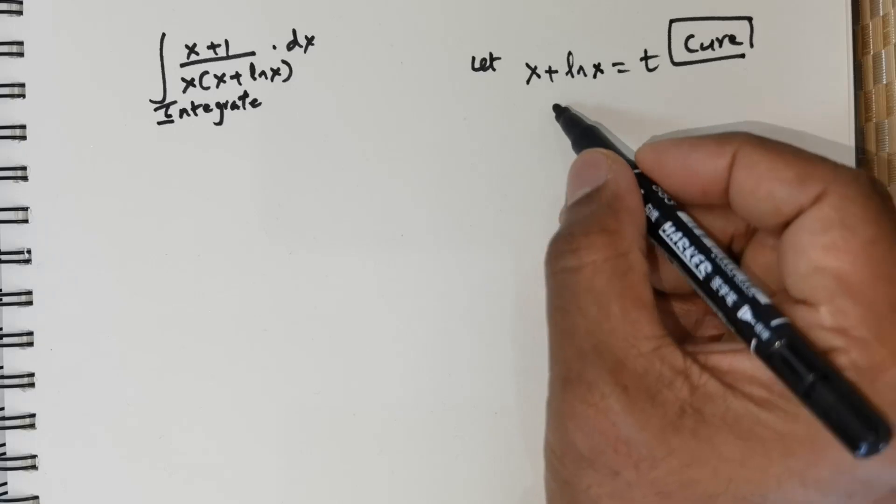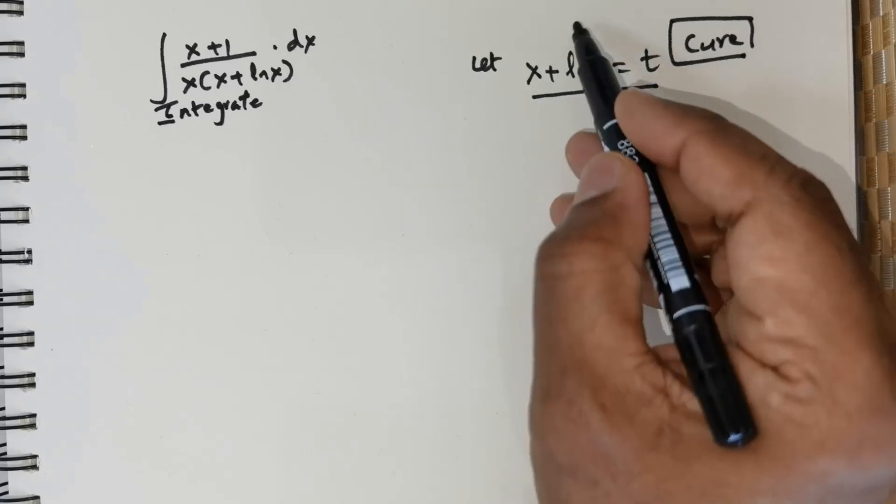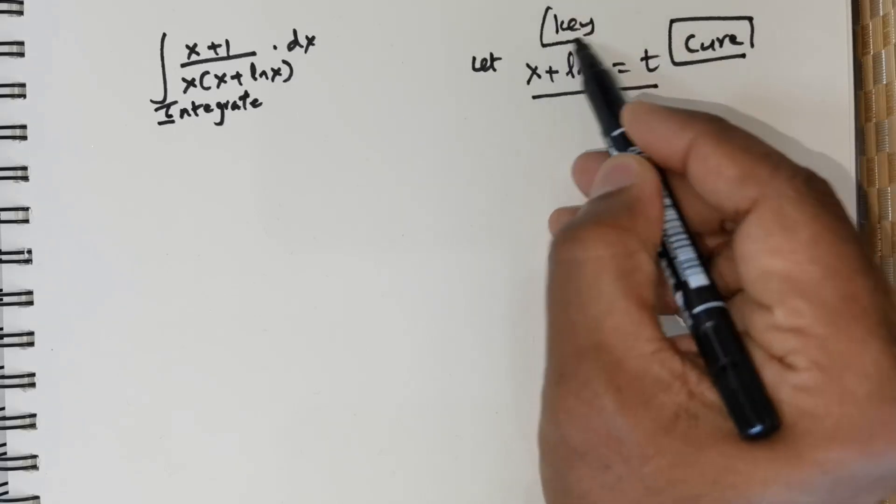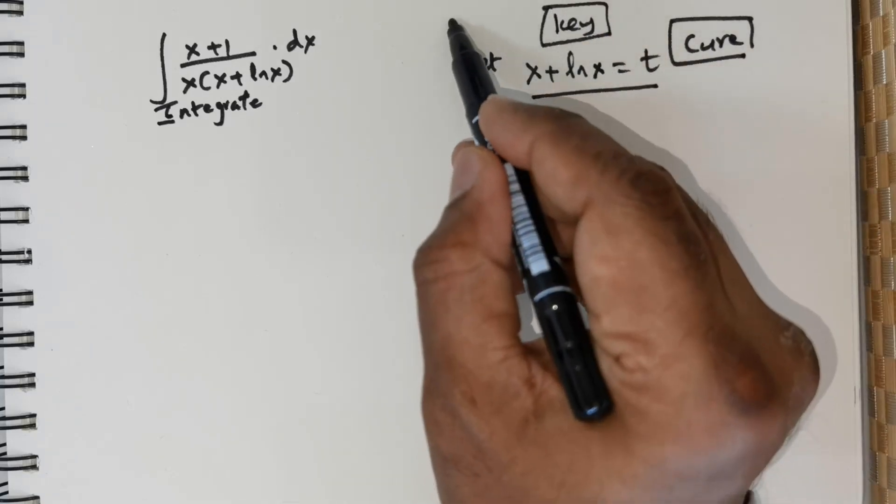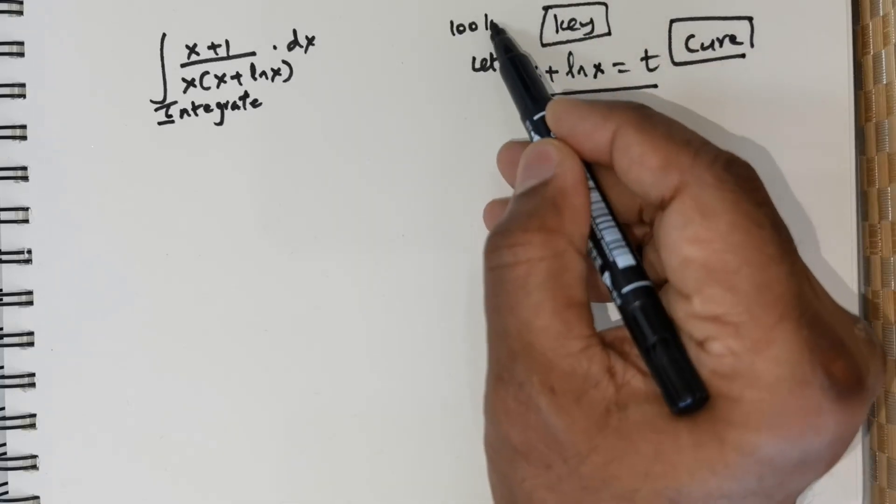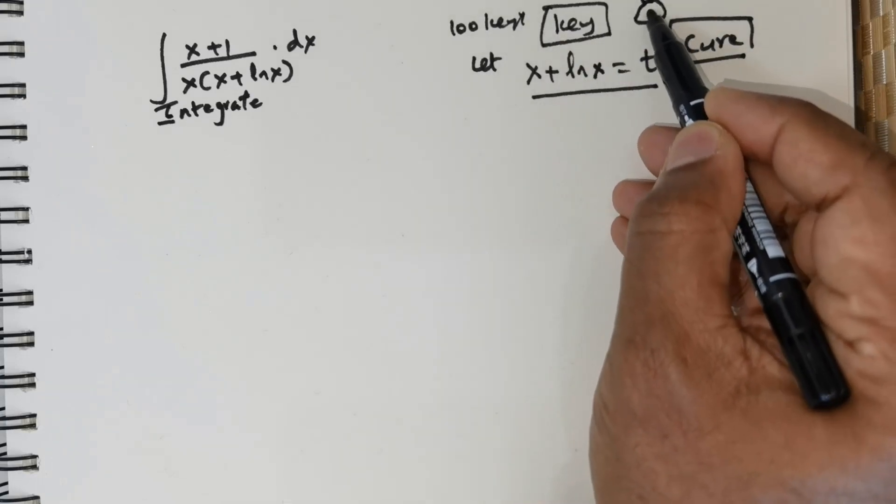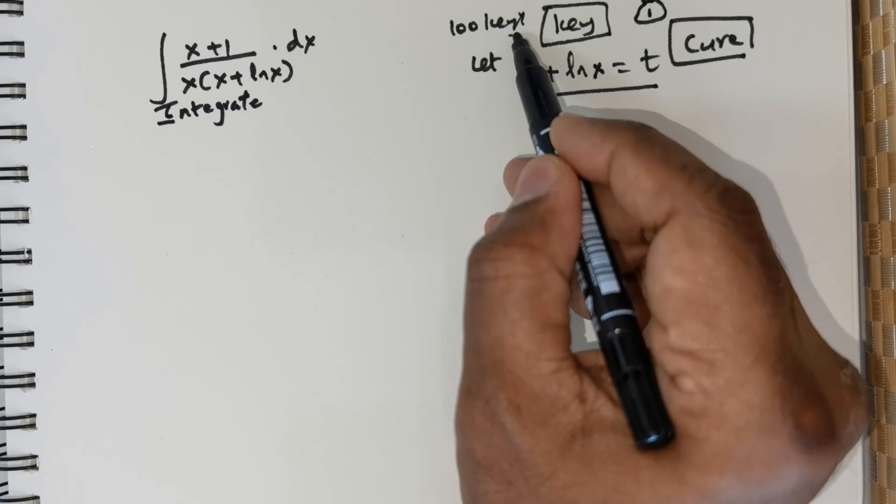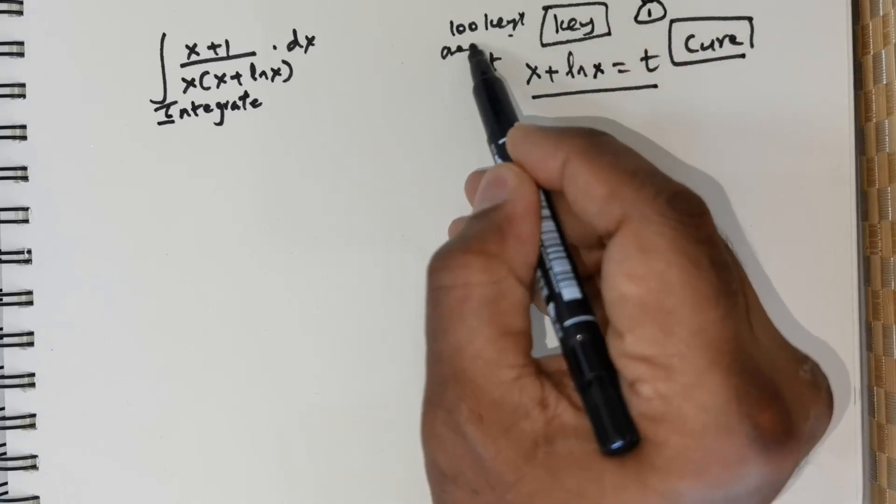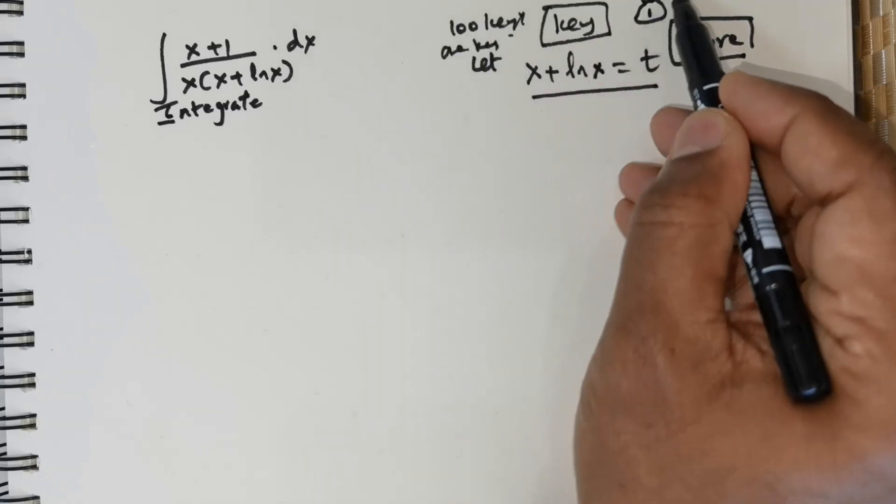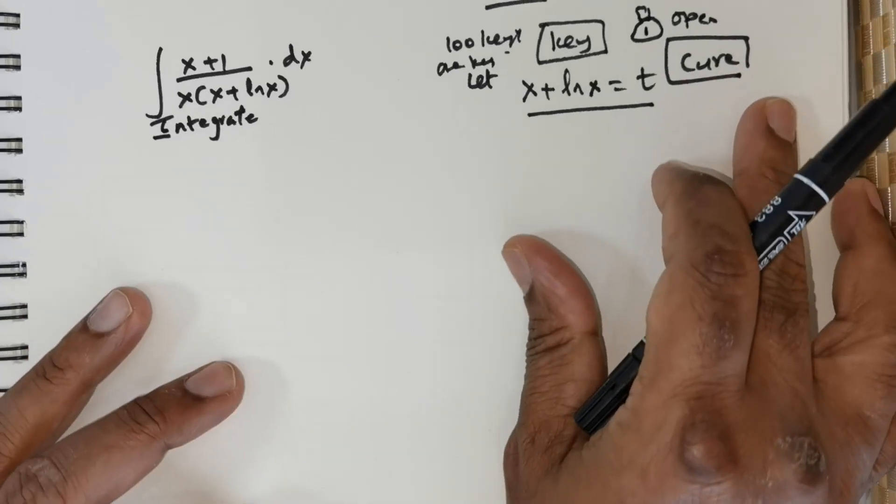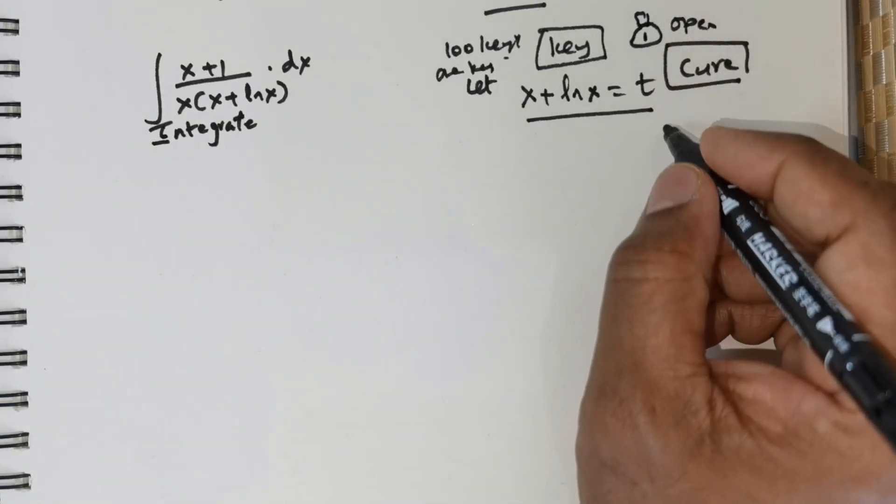Now to solve the problem, the most important aspect is the key. When I mention the key, say you have 100 different types of keys and there is a lock. But out of these 100 keys, there is just one key that would exactly open the lock, right?